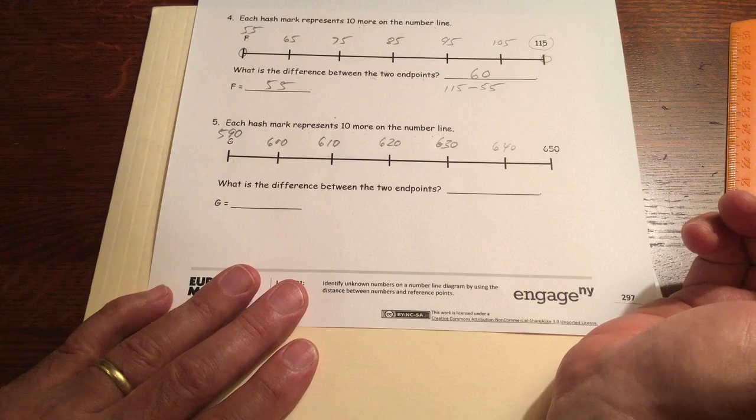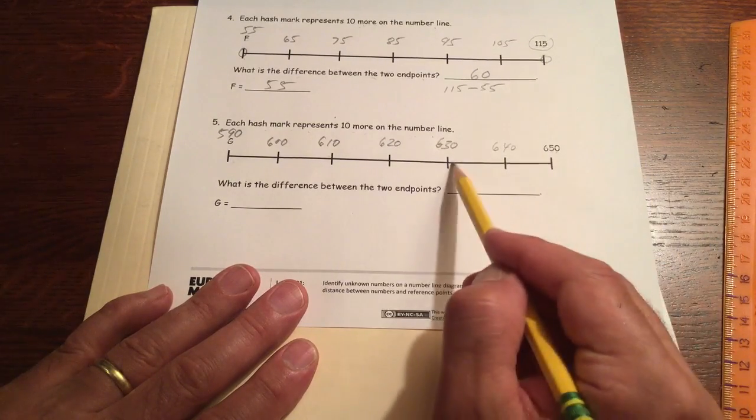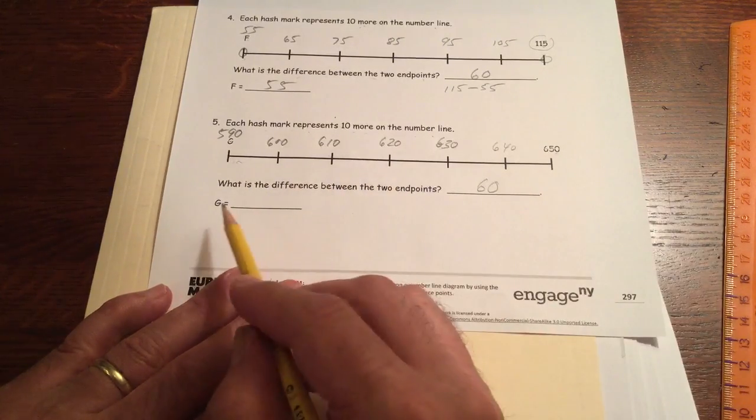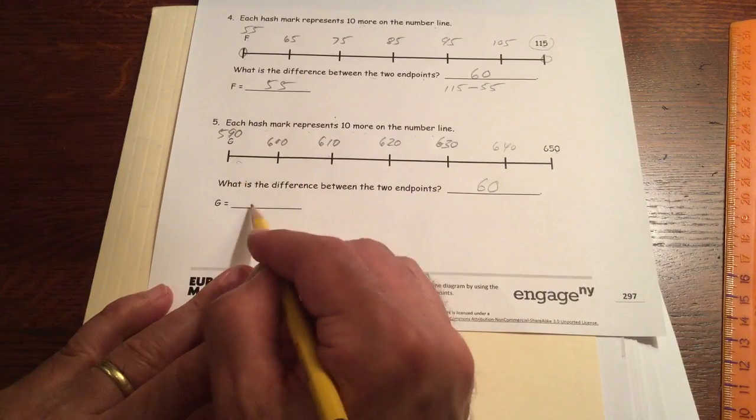The difference between the two endpoints? 10, 20, 30, 40, 50, 60. And G is 590.